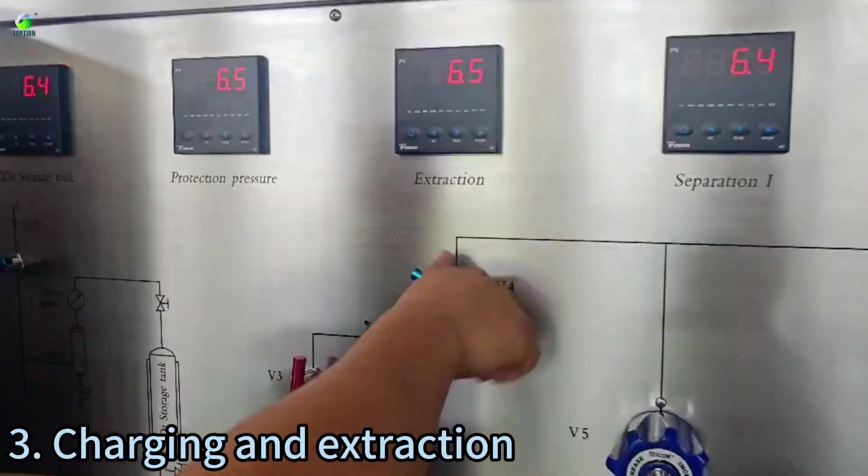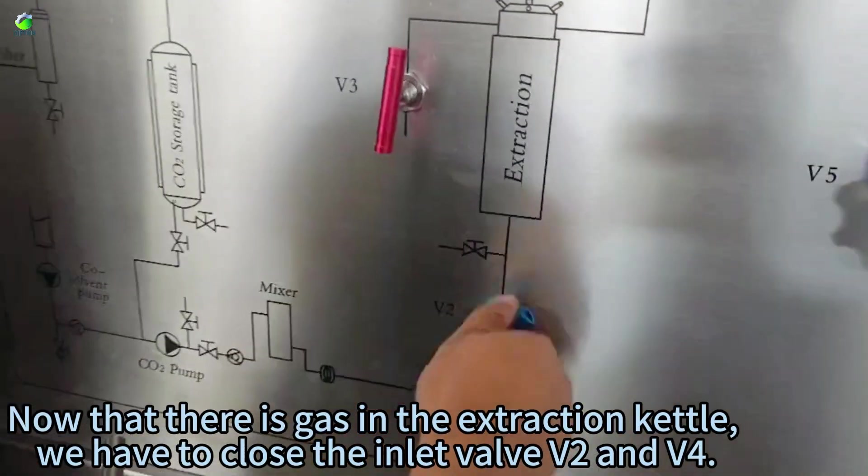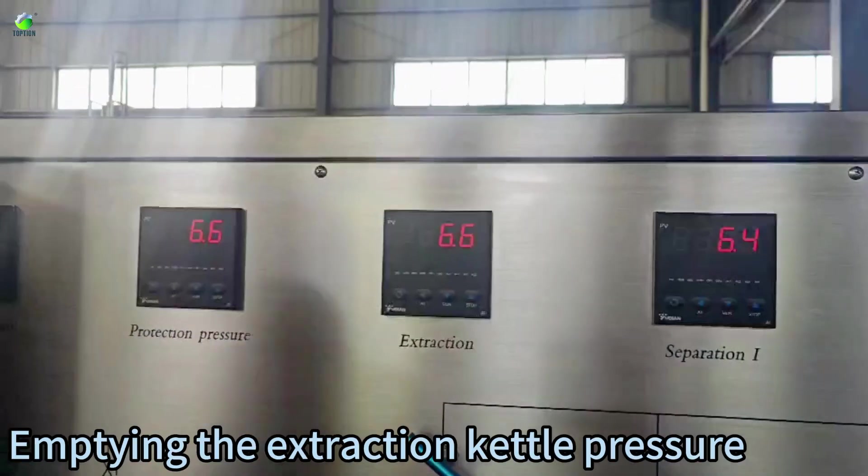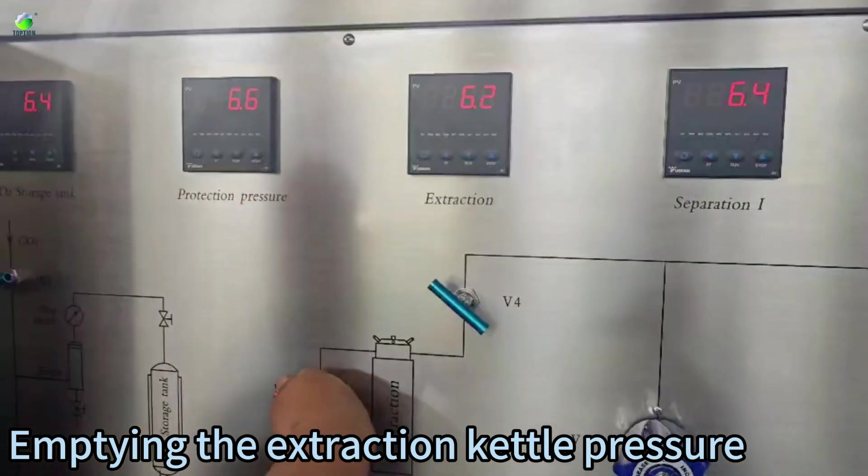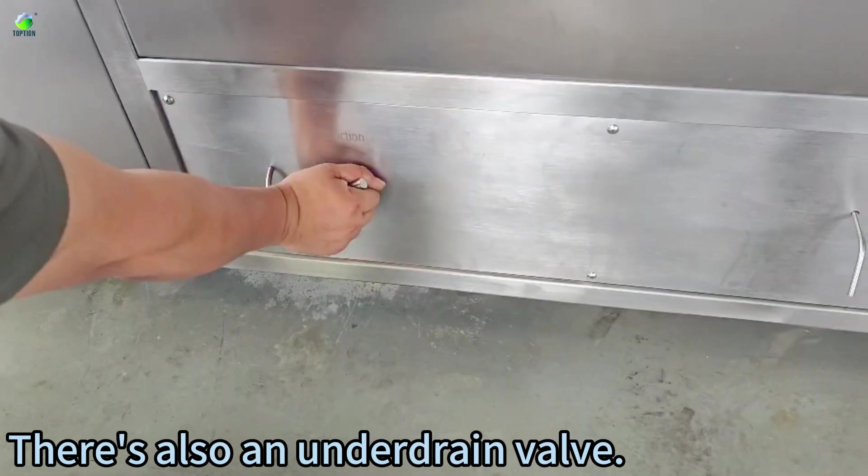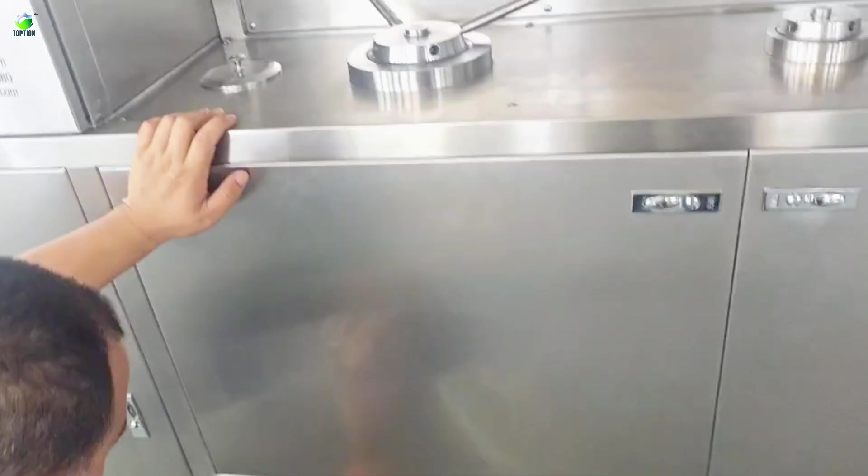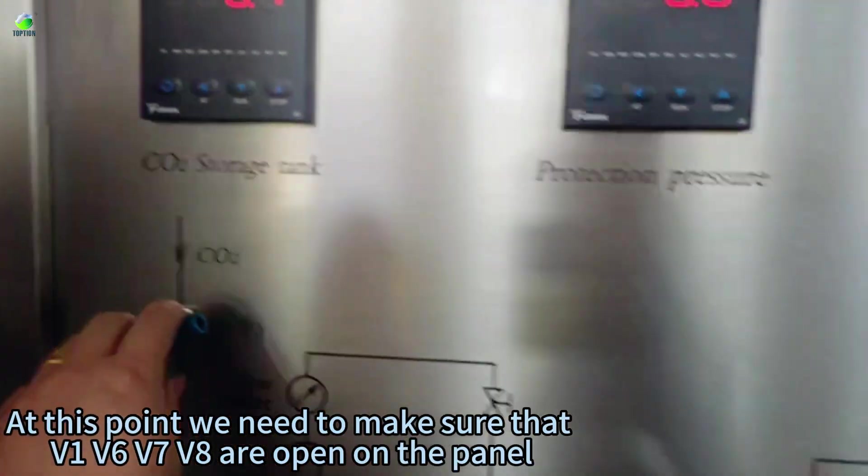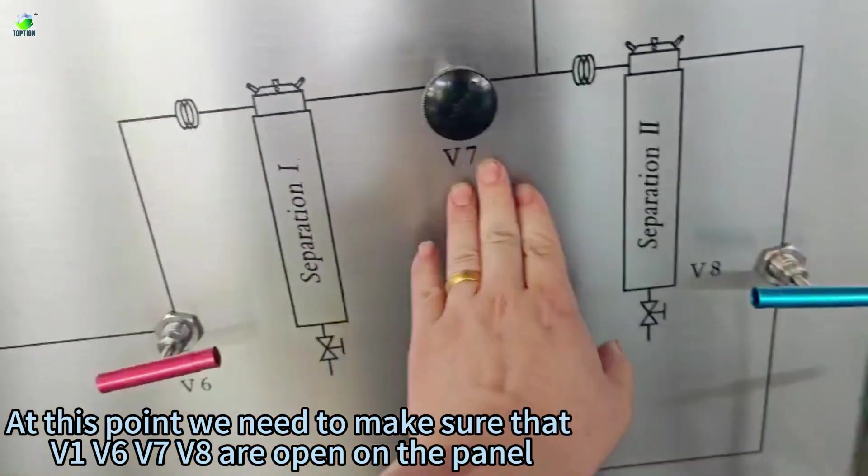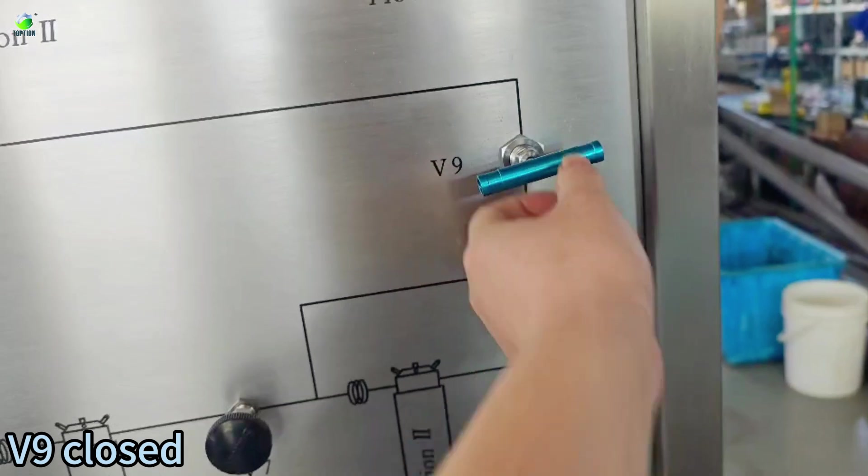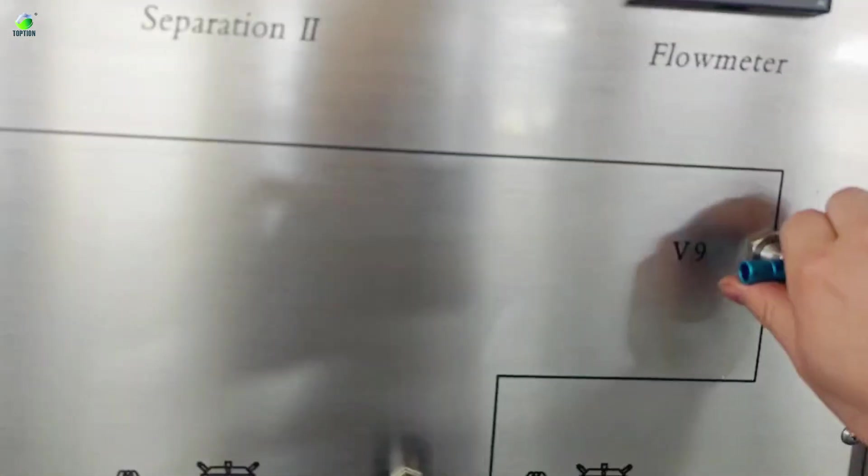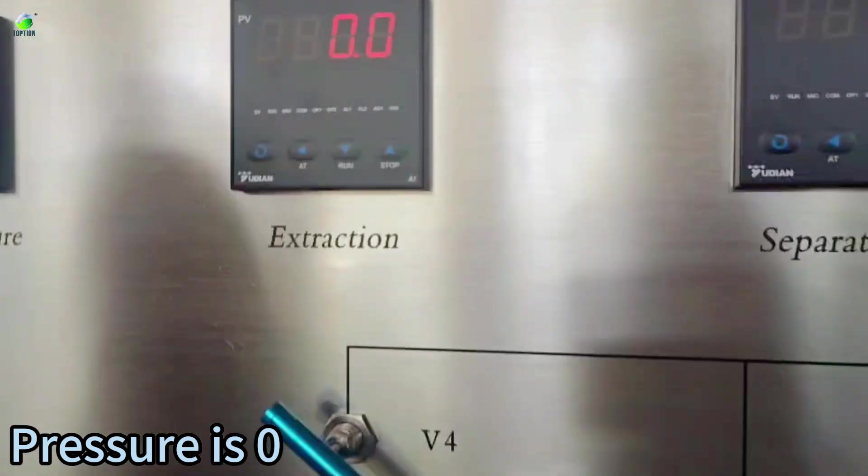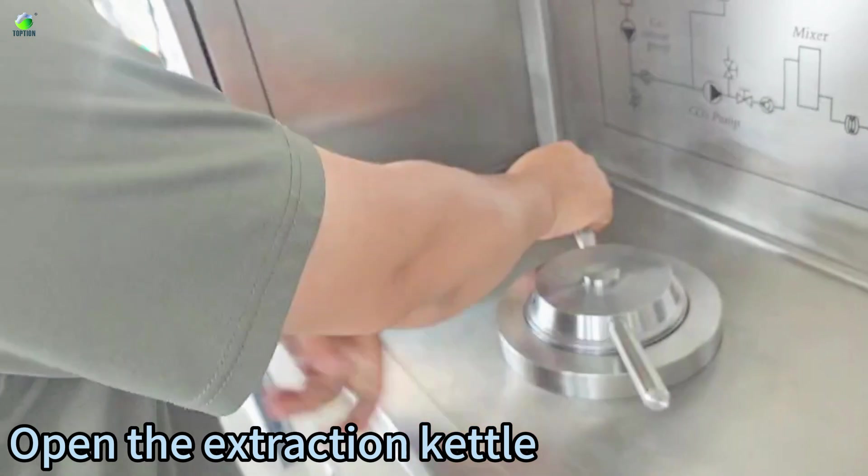Charging and extraction. Now that there is gas in the extraction kettle, we have to close the inlet valve. Emptying the extraction kettle pressure. There's also an under drain valve. The pressure is coming down. At this point we need to make sure that V6, V7, V8 are open on the panel. Pressure is linked. Open the extraction kettle.